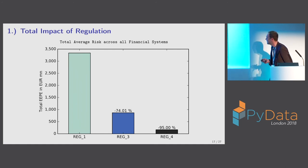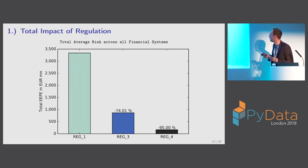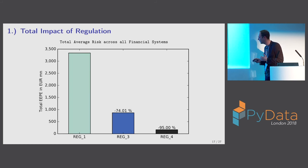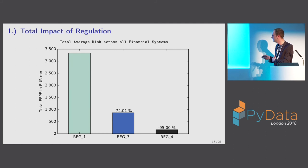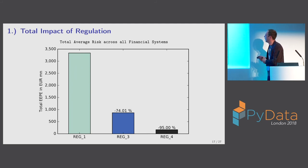Here are the results. At the highest level of aggregation — looking at total average risk across all generated financial systems — we see that under the base regulation, risk is relatively high. The variation margin regulation shows a big reduction of about 74%. And comparing to the more recent initial margin regulation, the risk reduction is even higher.